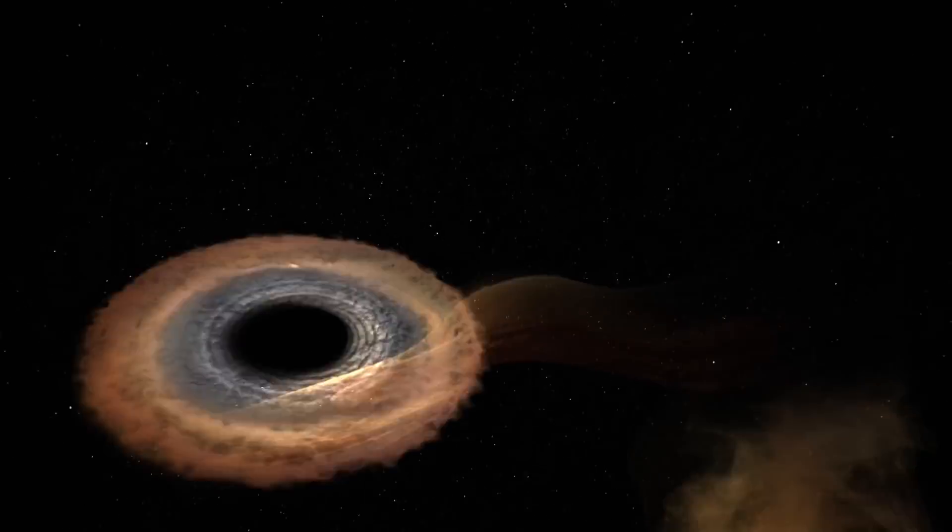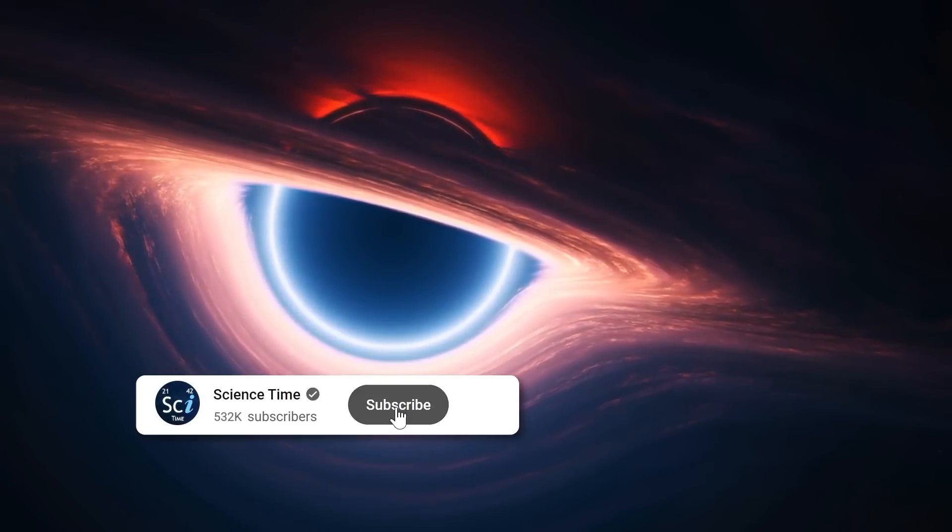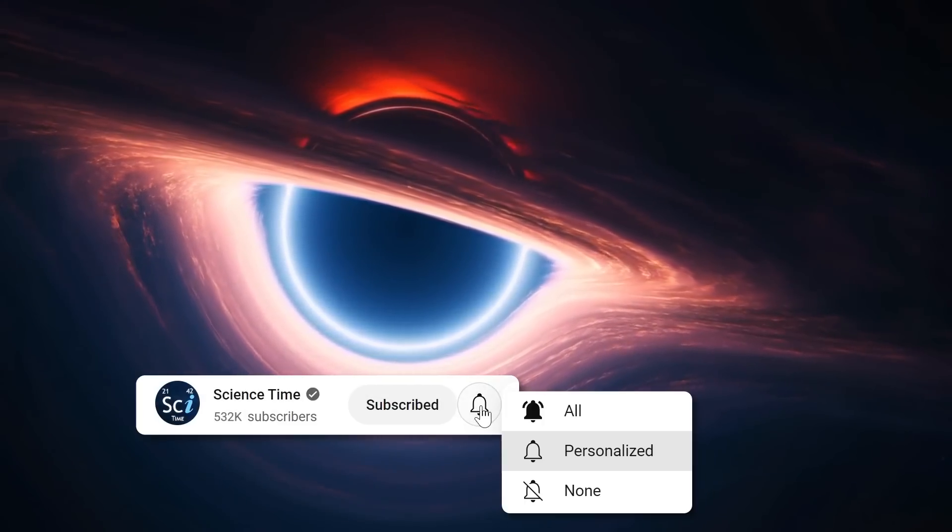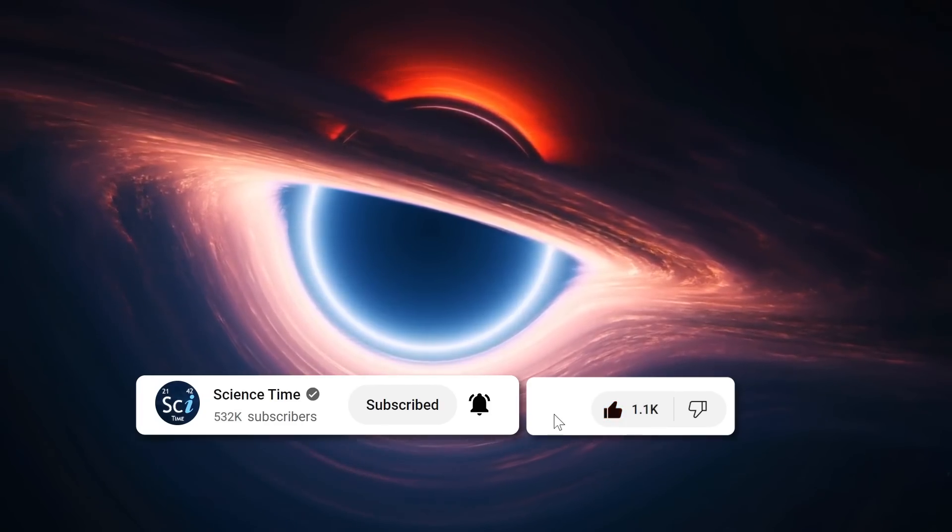You get black holes from Einstein. Centered in a black hole is a singularity. All the theories say the matter occupies zero volume, thereby having infinite density. And that's kind of weird. What? No, you can't have infinite. No.